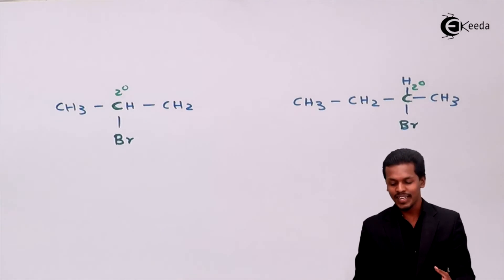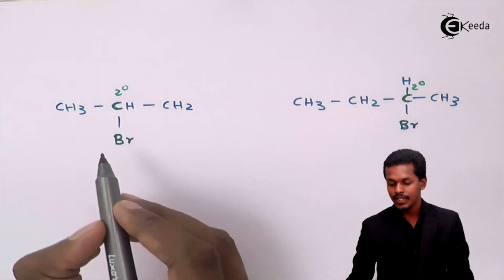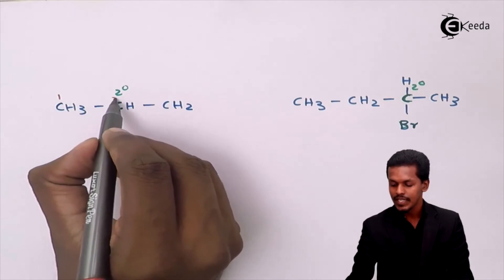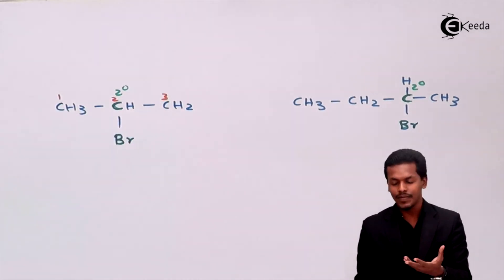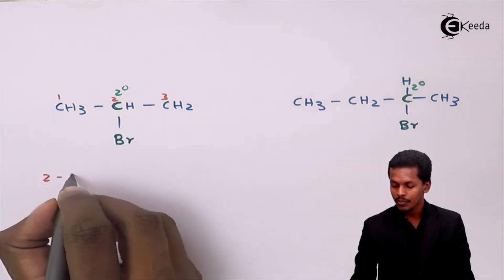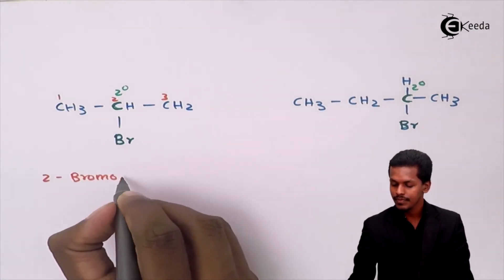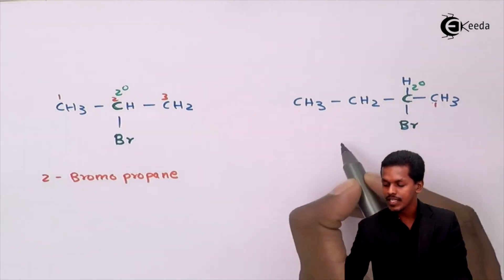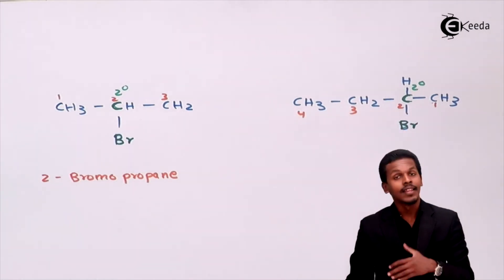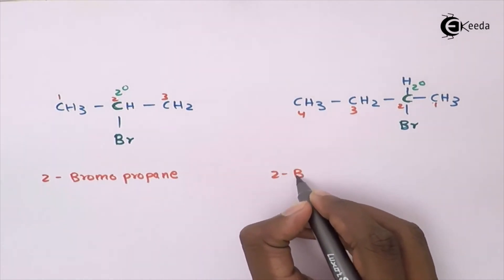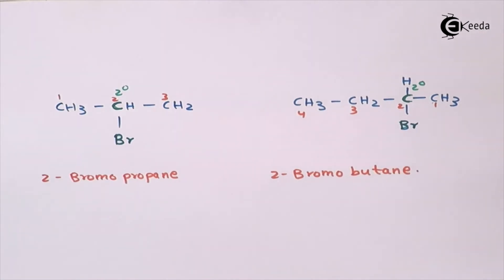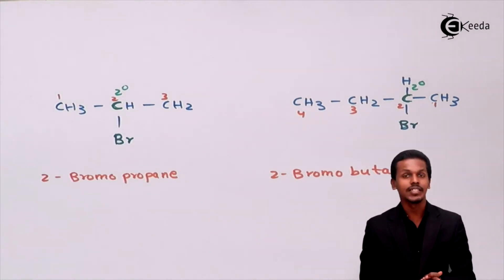For IUPAC names of secondary alkyl halides: for the first example, selecting the longest chain and numbering from the end closest to the halogen — C1, C2, C3 — the name is 2-bromopropane. For the second example, numbering C1, C2, C3, C4, the name is 2-bromobutane.